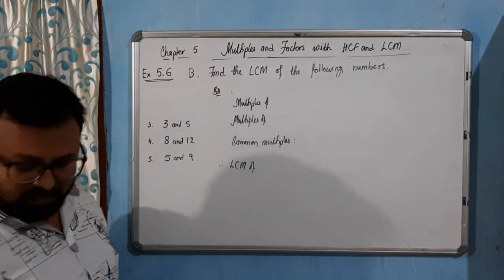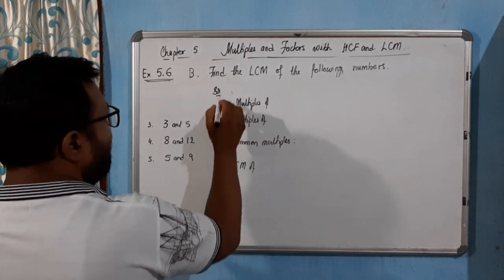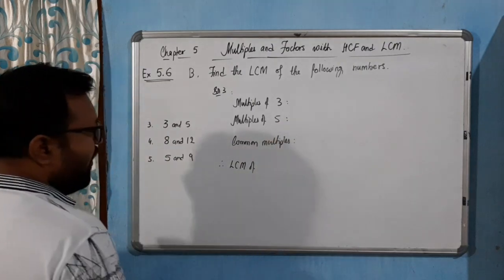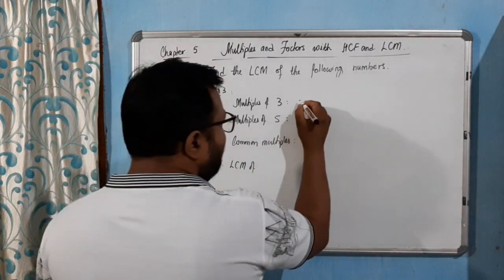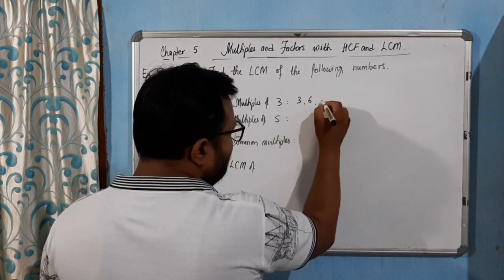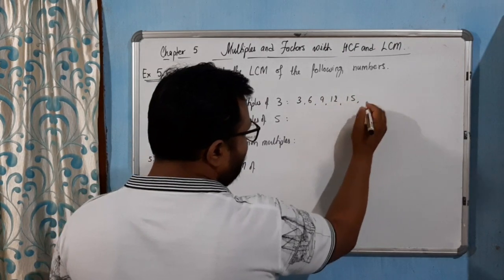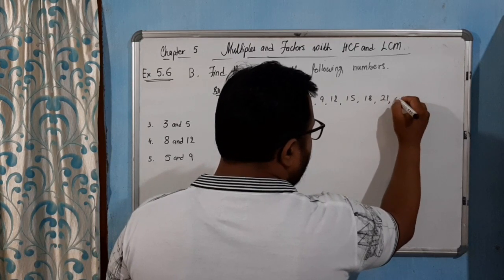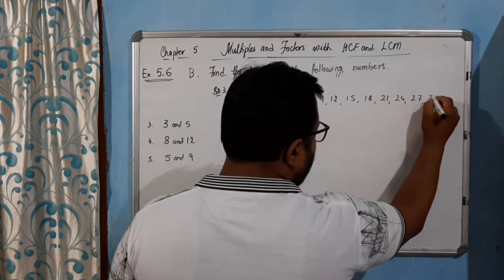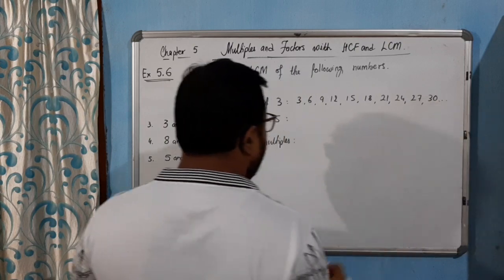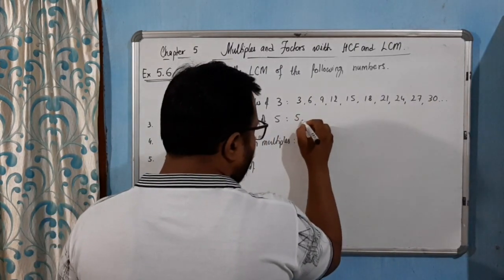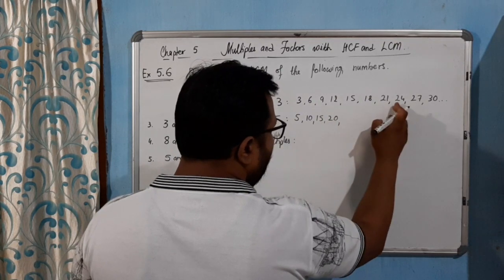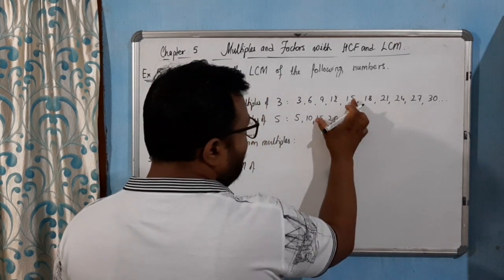Question number three: find the multiples of three and five. Three times one is three, three times two is six, three times three is nine, three times four is twelve, three times five is fifteen, three times six is eighteen, three times seven is twenty-one, three times eight is twenty-four, three times nine is twenty-seven, three times ten is thirty. And for five: five, ten, fifteen — we got fifteen already!